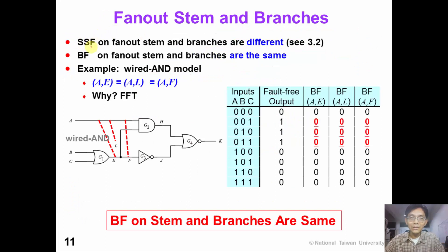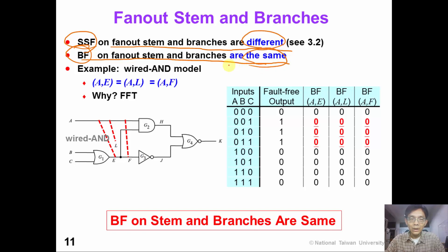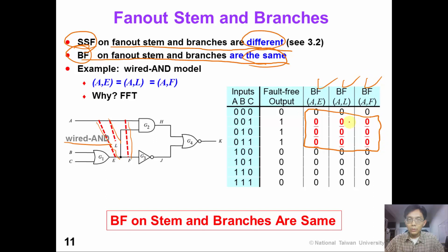In our discussion of single stuck-at fault, we mentioned that stuck-at faults on a fan-out branch and the fan-out stem are considered different faults. However, in the case of bridging fault, a bridging fault on a fan-out stem and fan-out branches are considered the same. For example, given this circuit, there are A-E, A-L, and A-F bridging faults. Considering the wire-AND fault model, the output will be the same for these three faults. So for bridging fault, A-E, A-L, and A-F bridging faults are considered the same.